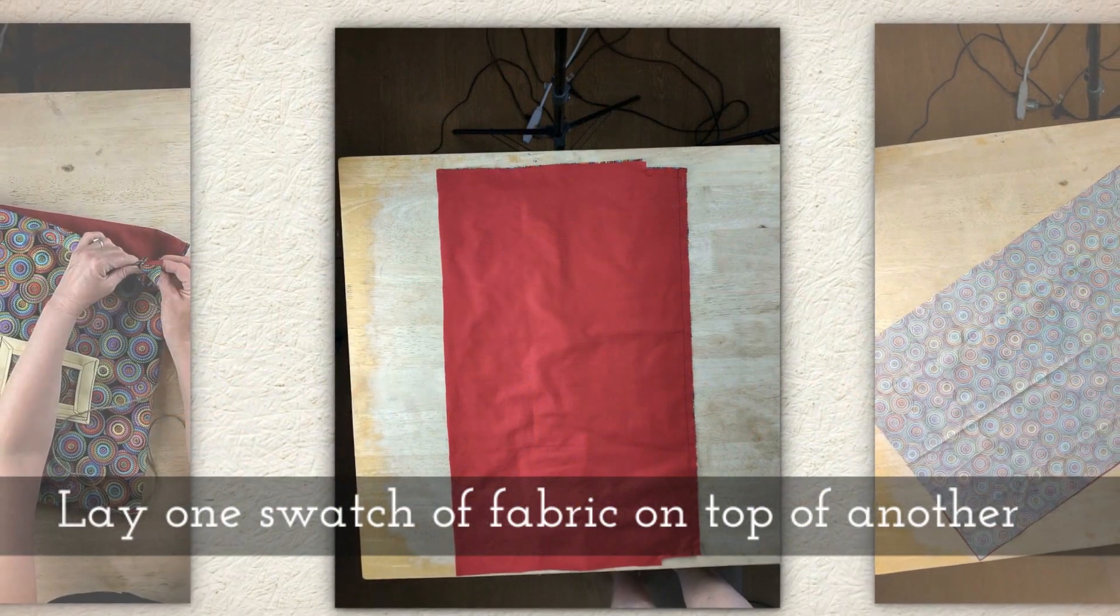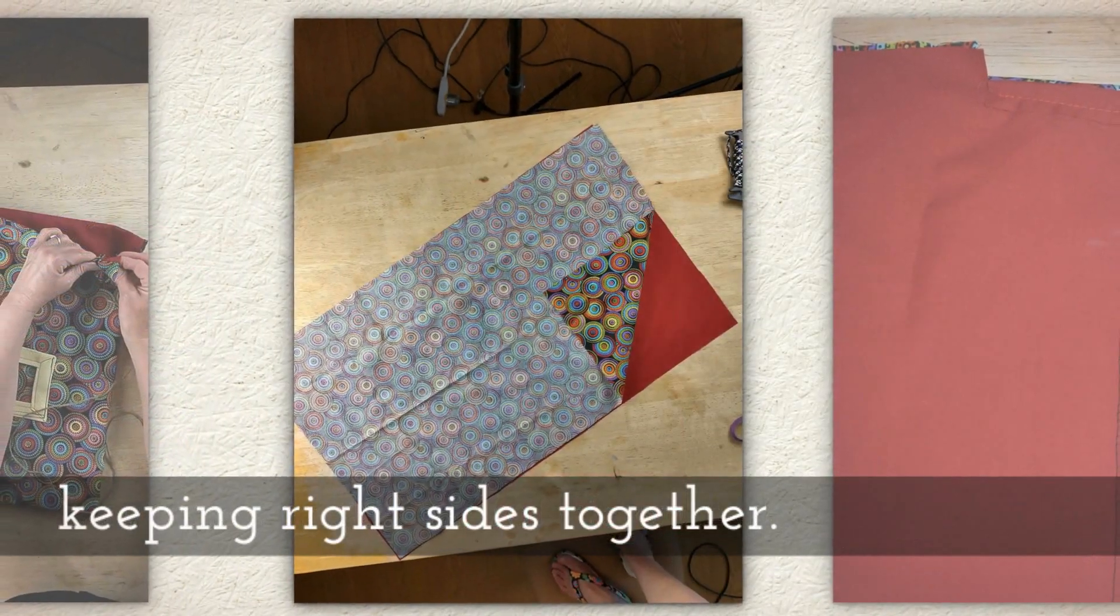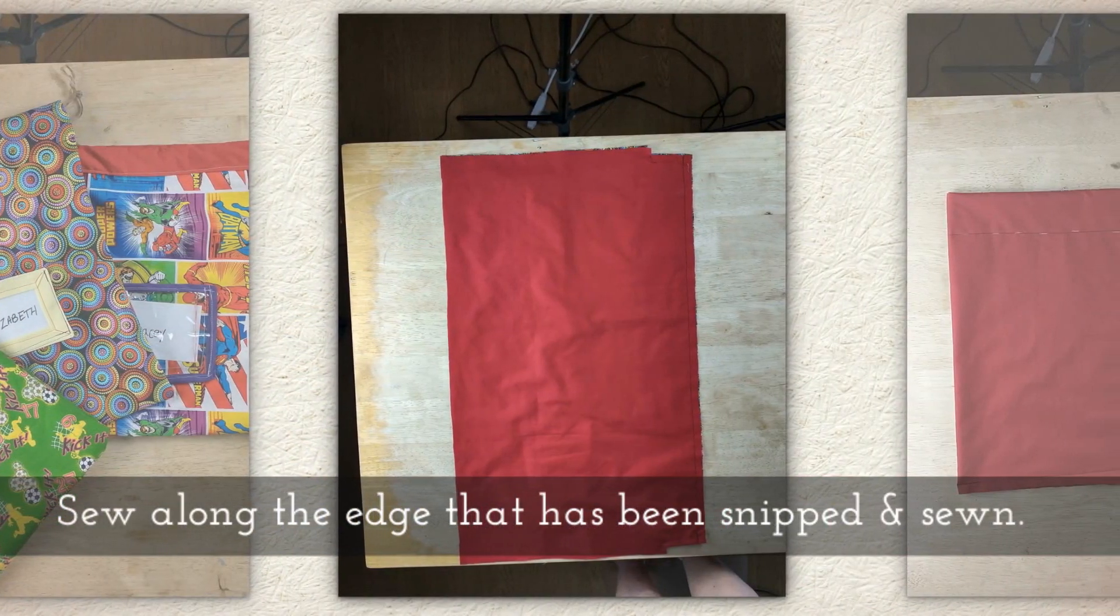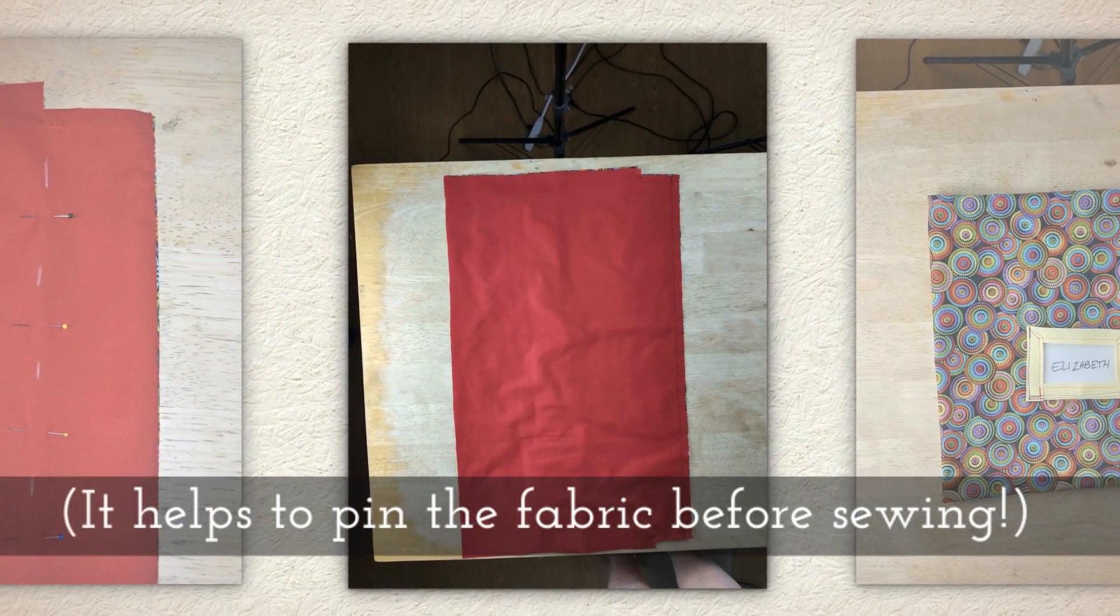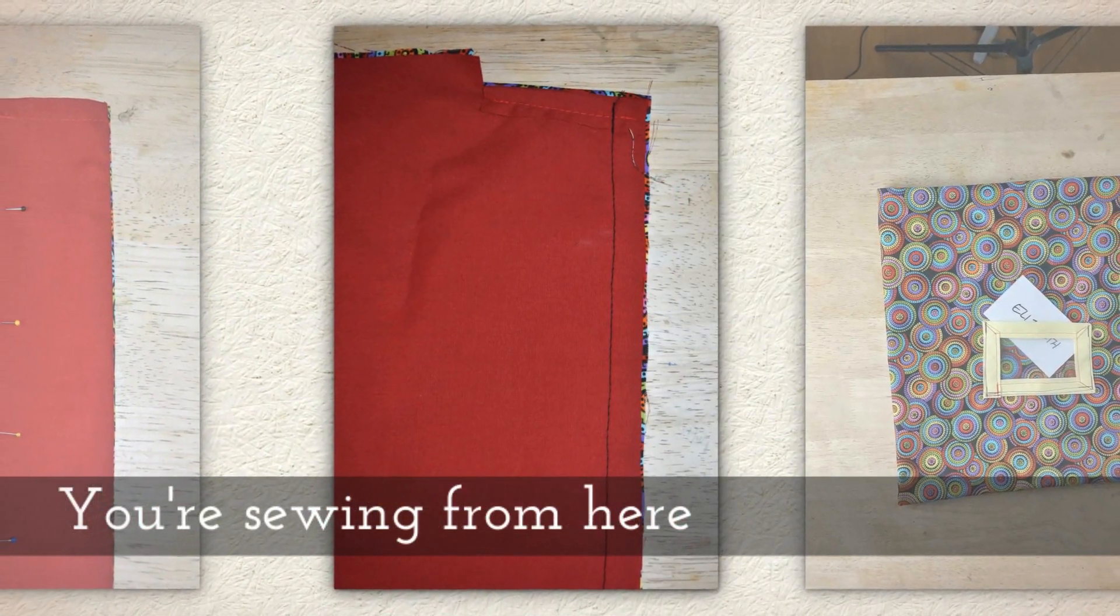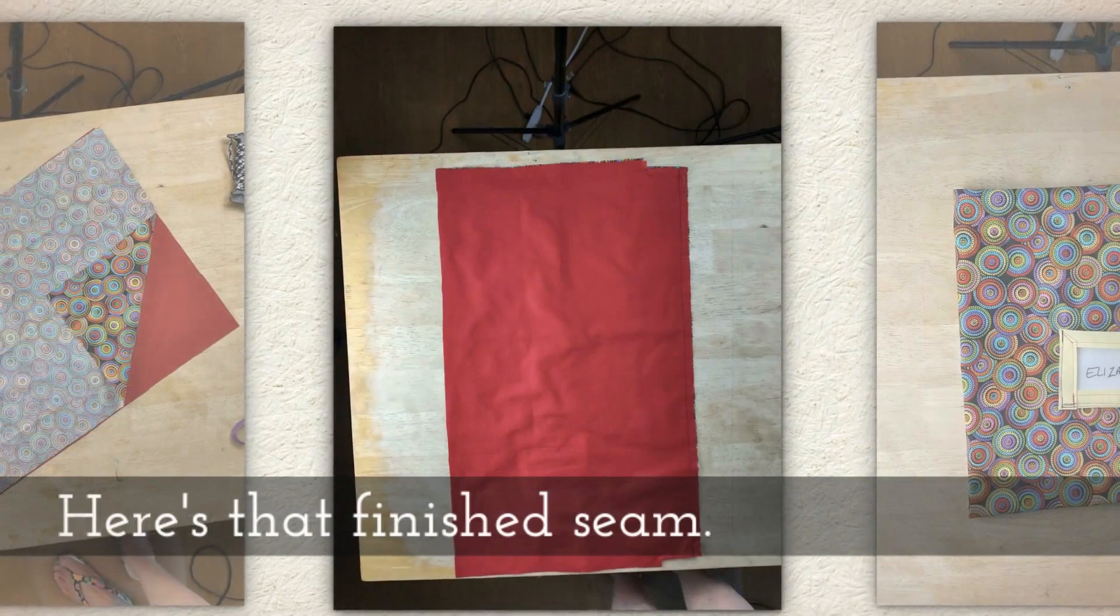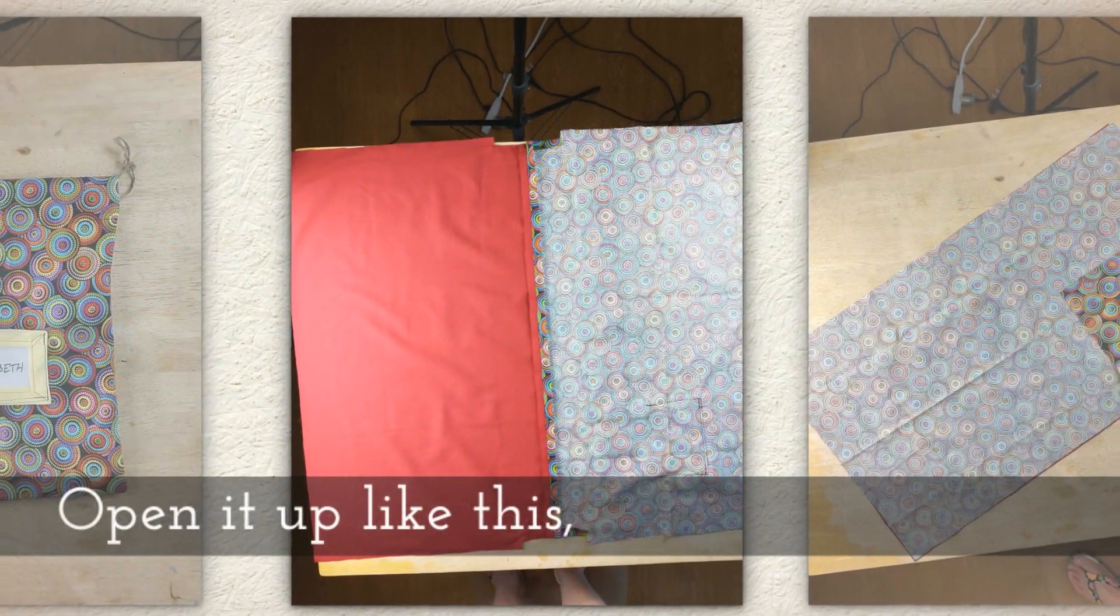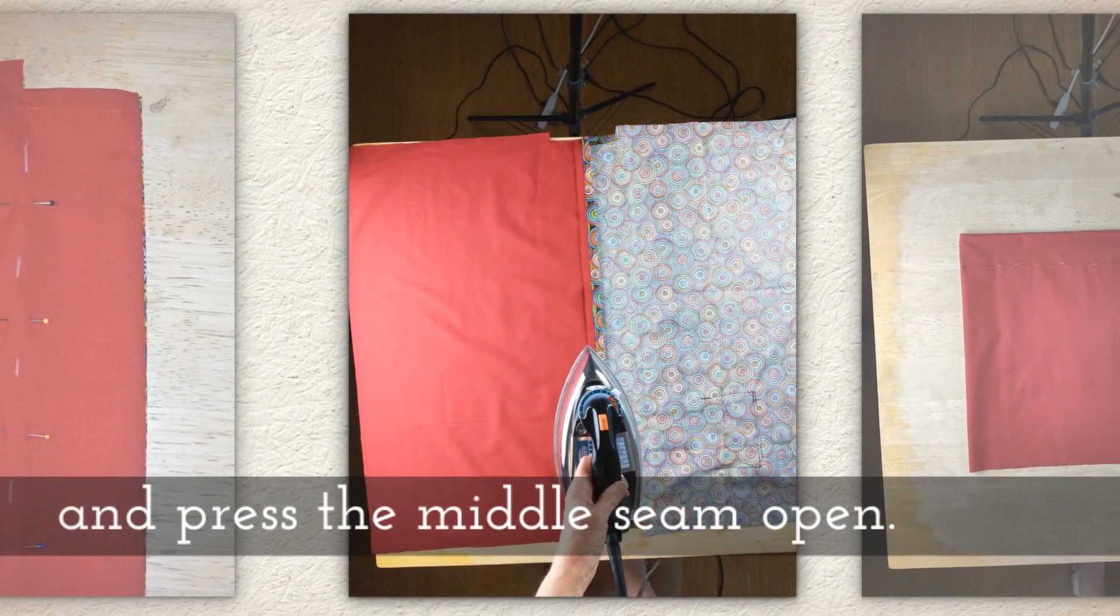Lay one swatch of fabric on top of another, keeping right sides together. Sew along the edge that has been snipped and sewn. It helps to pin the fabric before you sew it. You're sewing from here, where we've snipped the edge, down to here. Here's that finished seam. Open it up like this.